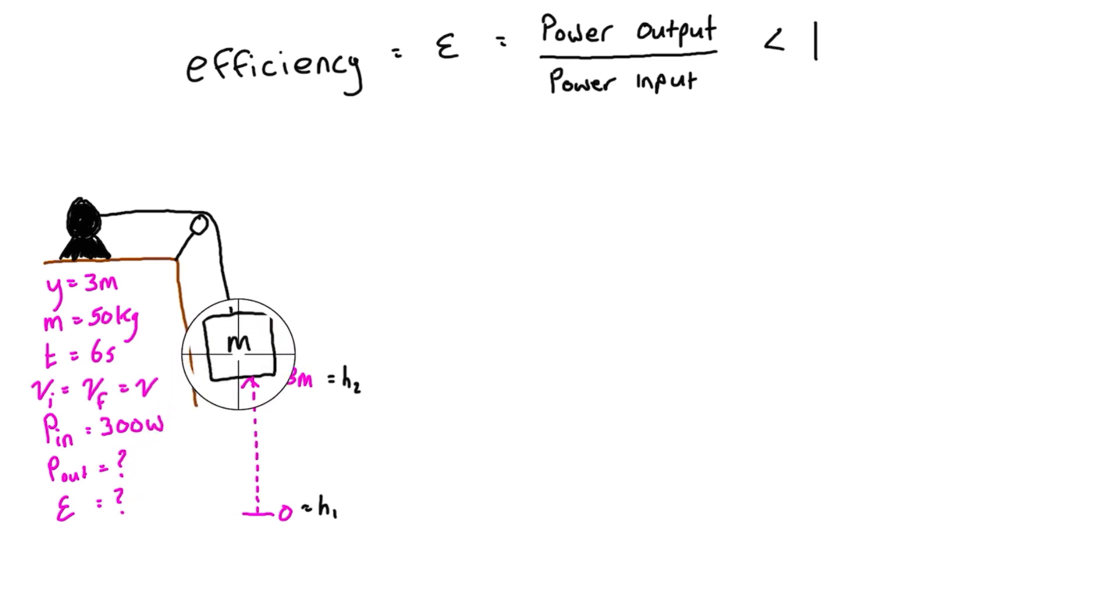We want to figure out what the actual power output is, and we can do that simply by using the conservation of energy equation and then the power equations. First, we're going to find the power output, and then we're going to find the efficiency.